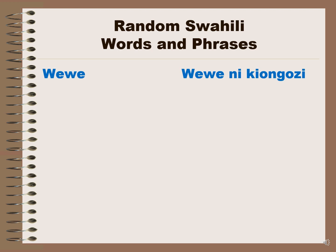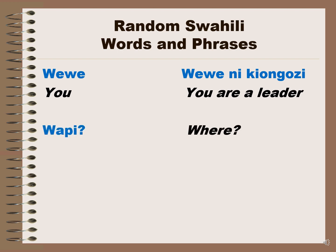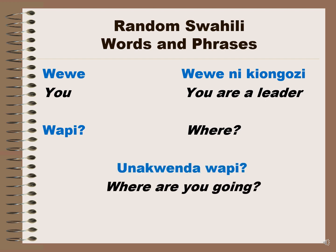Wewe means you. 'Wewe ni kiongozi' means you are a leader. Wapi means where. 'Unakwenda wapi' means where are you going. Wao means they or them — when you see this at the beginning of a sentence, it means they or them.